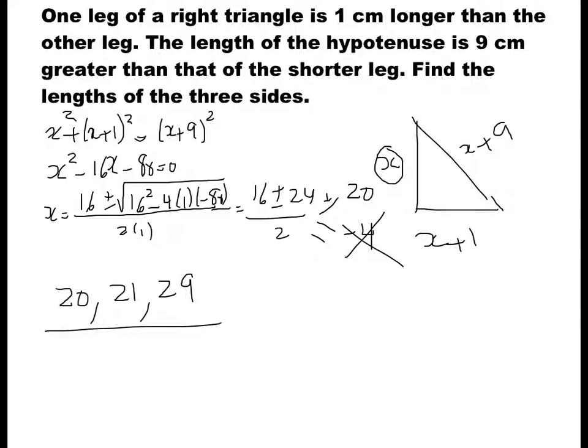So the three sides are x equals 20, x plus 1 equals 21, and x plus 9 equals 29. To verify, we can check using the Pythagorean theorem: 29 squared equals 21 squared plus 20 squared.